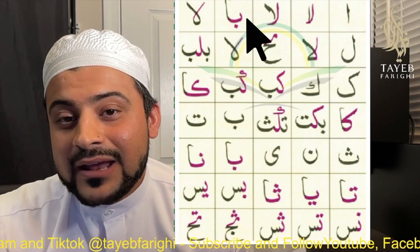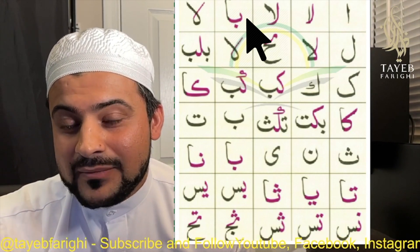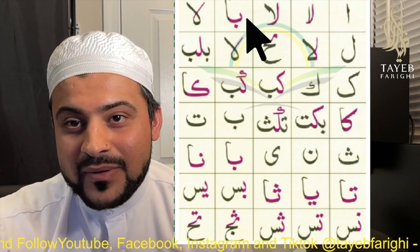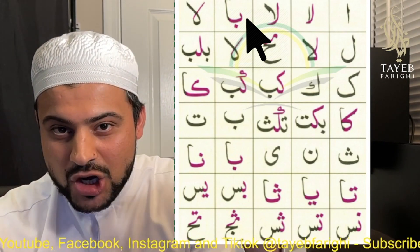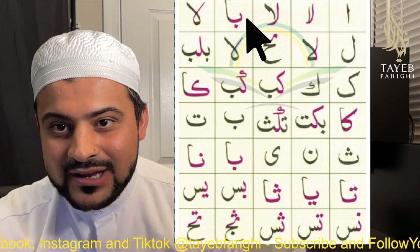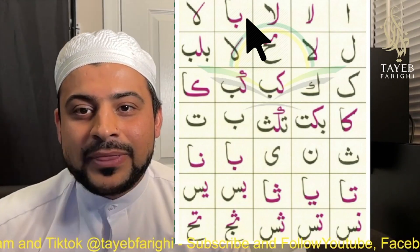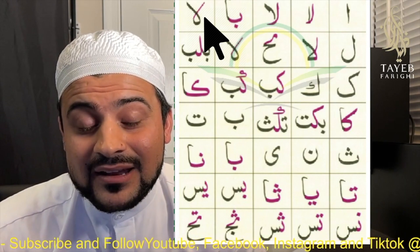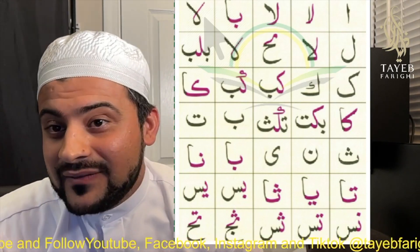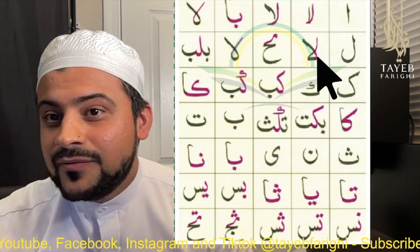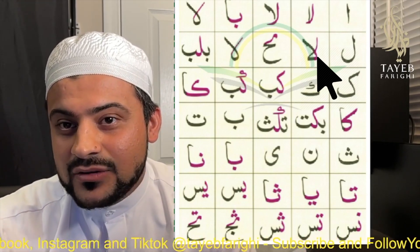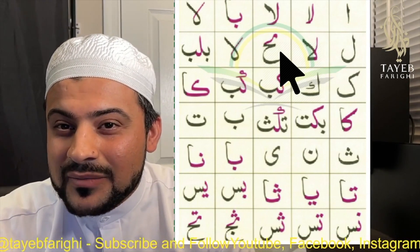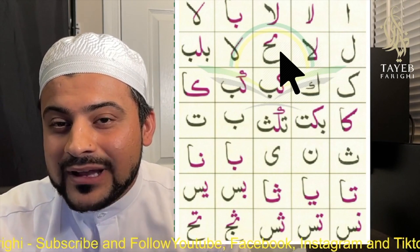Ba is connected and it became lowercase, then connected to alif. So we have lowercase and uppercase — the uppercase of ba is just a curved line with a dot on the bottom. Here we have it as lowercase, then alif — so ba-alif. Then we have lam-alif again in a different way, and lam-lam-alif. We have four different lam-alifs; anytime you see these, don't get confused. Here we also have lam-ha.